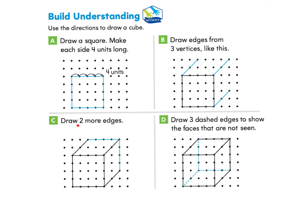Then we look at part C: Draw two more edges. Starting here, go over four units — one, two, three, four — that's one edge, then go down four units — one, two, three, four. Part D asks us to draw three dashed edges to show the faces that are not seen. Starting here, make little dashes going one, two, three, four, then forward with dashes — one, two. Go back to that spot and go over four with dashes — one, two, three, four. And voilà, you have drawn a cube!